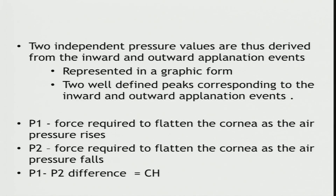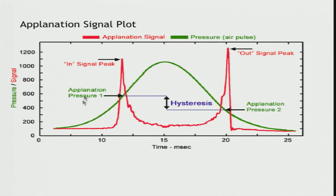These two independent pressure values derived from the inward and outward applanation events are represented in graphic form as two well-defined peaks, designated as P1 and P2, and the difference between these pressures is what we call corneal hysteresis. This is how the plot looks — the inward pressure as the air puff causes applanation, then the pressure goes down, the cornea goes into concavity and comes back to the applanated level which is P2, and the difference is the hysteresis.